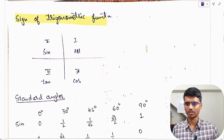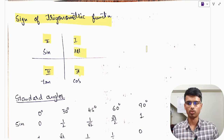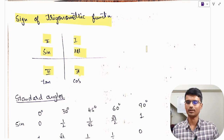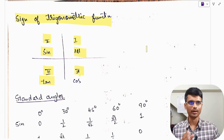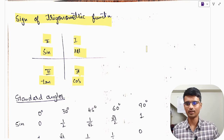Now the sign of trigonometric functions across quadrants. In the first quadrant, all trigonometric ratios are positive. In the second quadrant, sin and cosec are positive; the rest are negative. In the third quadrant, tan and cot are positive; the rest are negative. In the fourth quadrant, cos and sec are positive; the rest are negative.